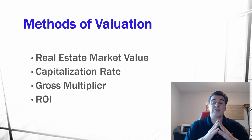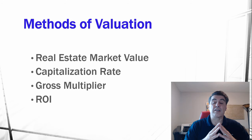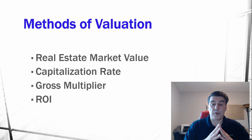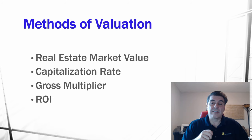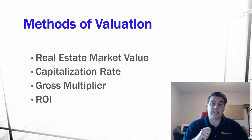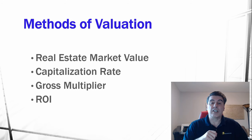The first method is real estate market value — this looks at what homes are selling for in the area. Next is the capitalization rate, which determines your risk level; the lower the cap rate, the lower the risk. Next is the gross multiplier, which tells you how many years based on present rent income before the property pays for itself.